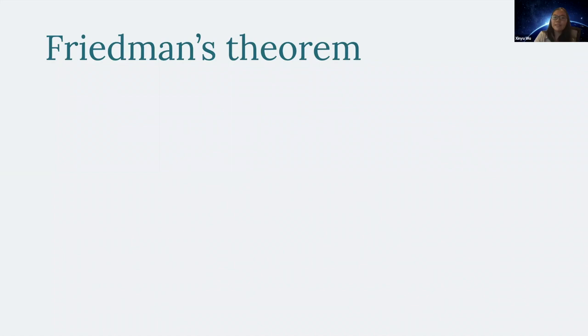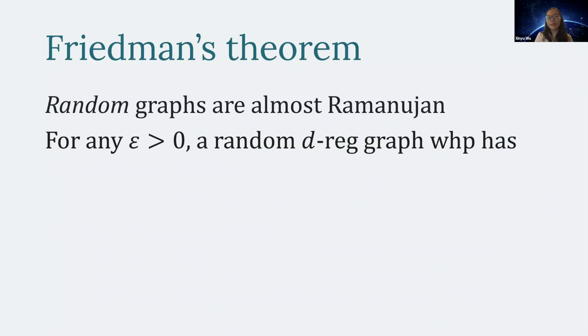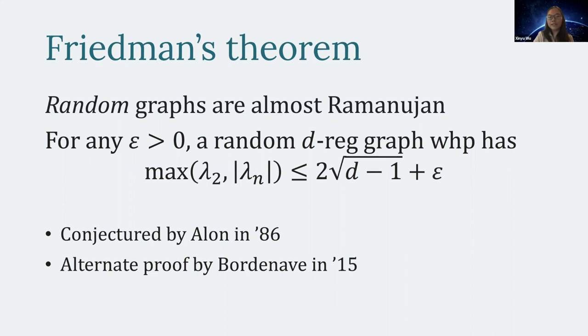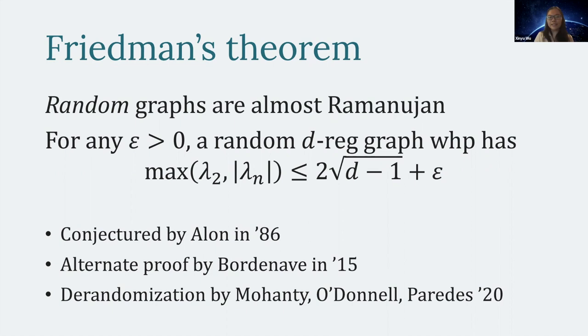For random graphs: random graphs are almost Ramanujan in the sense that for every ε > 0, a random d-regular graph with high probability has all non-trivial eigenvalues inside the Ramanujan interval [−2√(d−1), 2√(d−1)]. This was conjectured by Alon and proven by Friedman, with an alternate proof by Bordinov. There was also a recent derandomization of Friedman's theorem by Mohanty-O'Donnell-Paredes, which our work builds on and uses for the derandomized version of the Bonhoeff-Collins theorem.